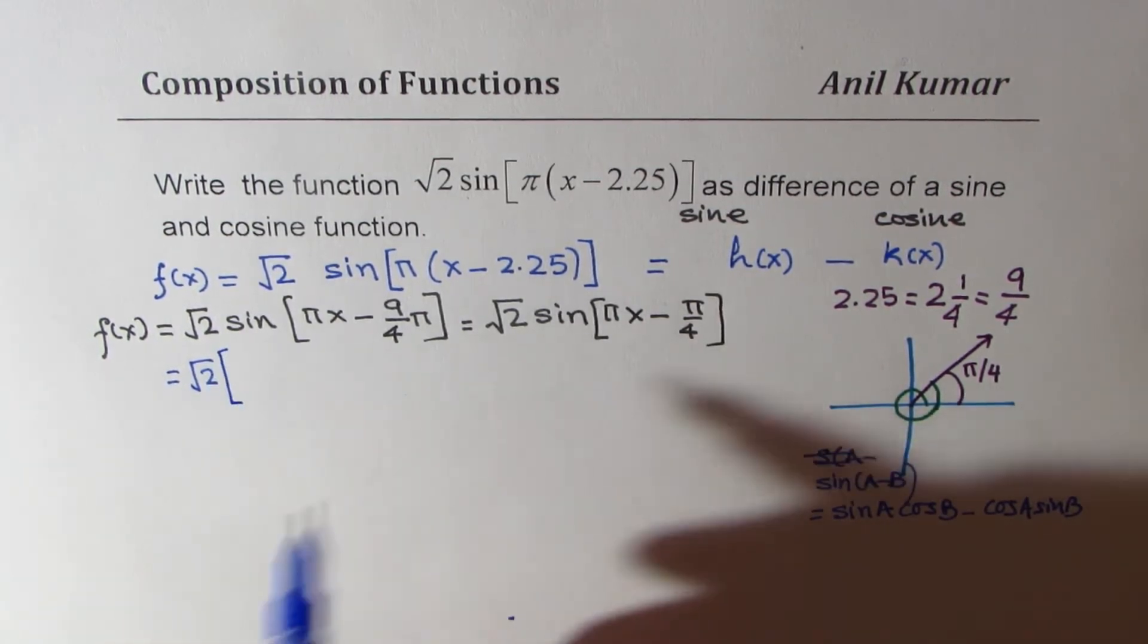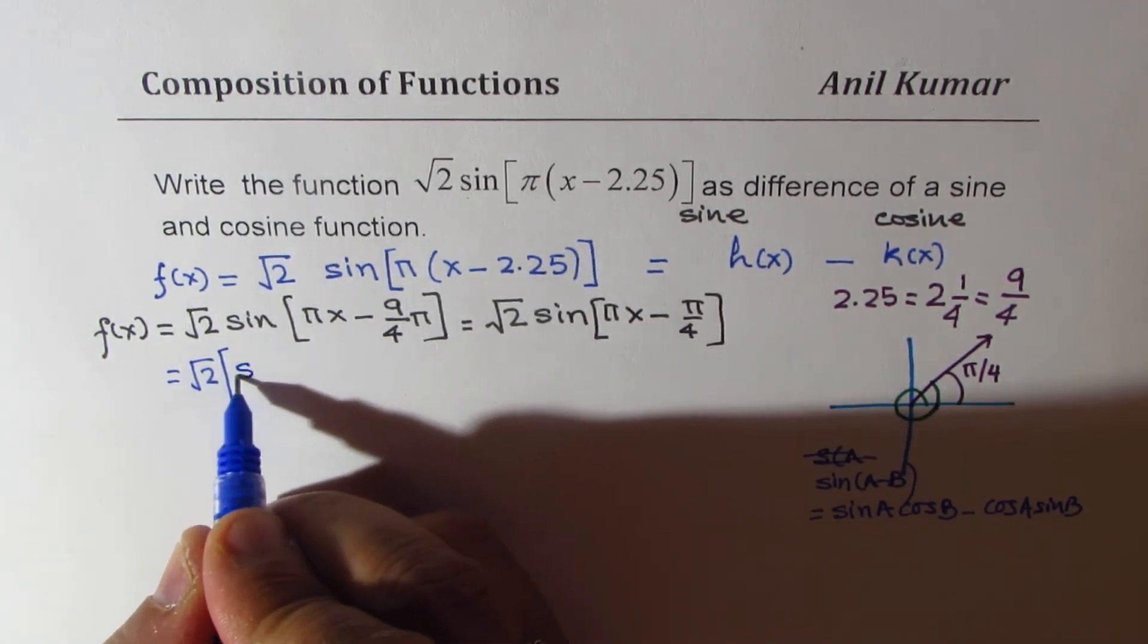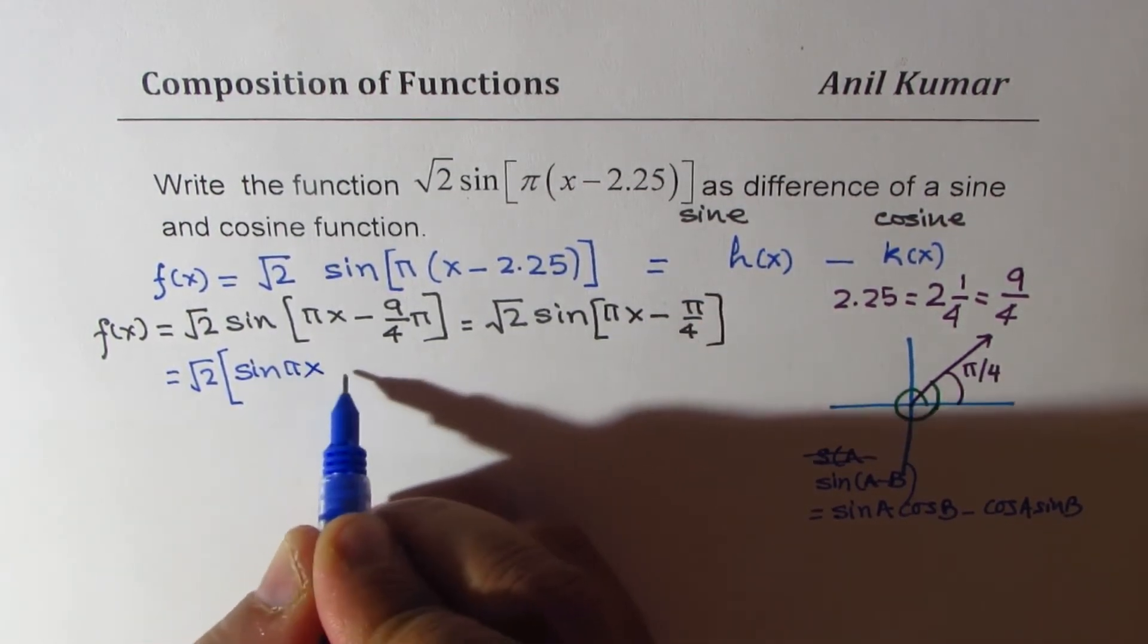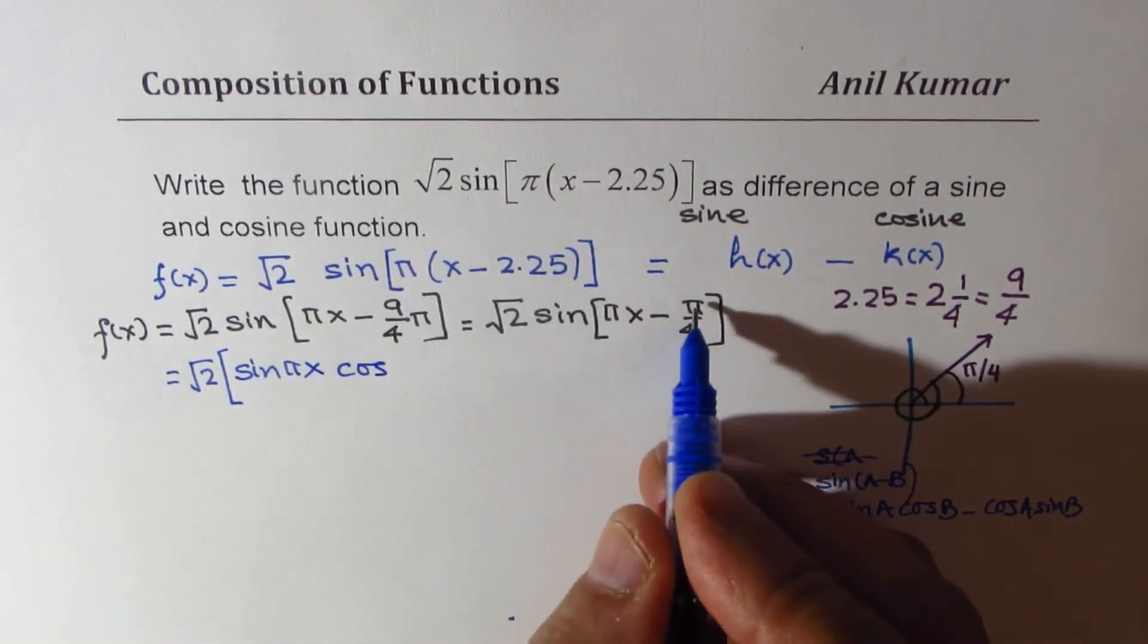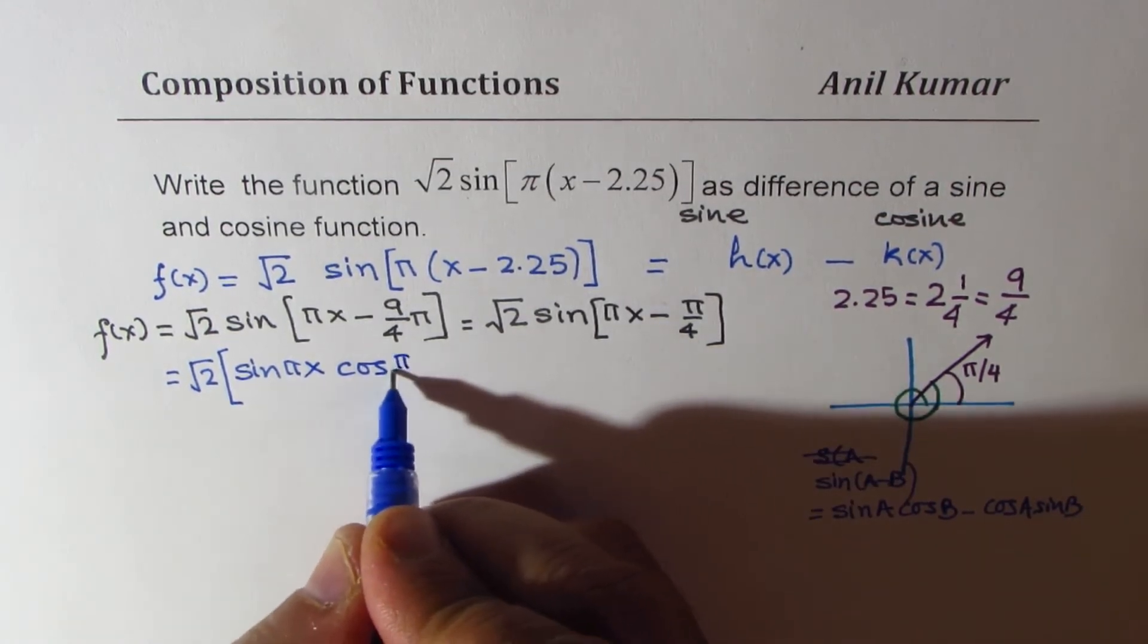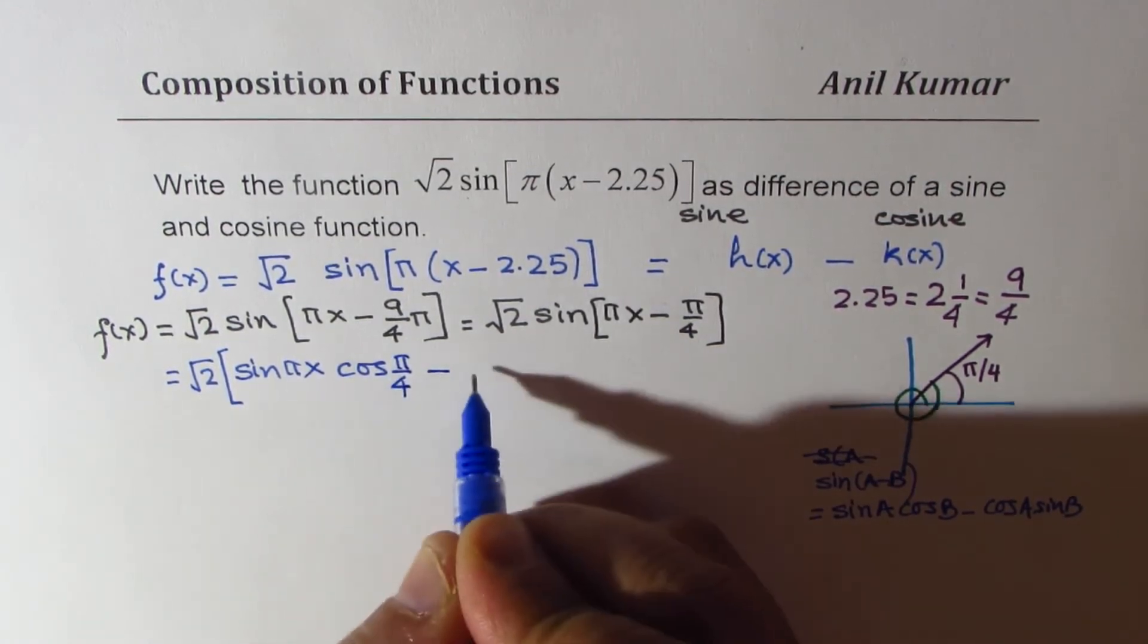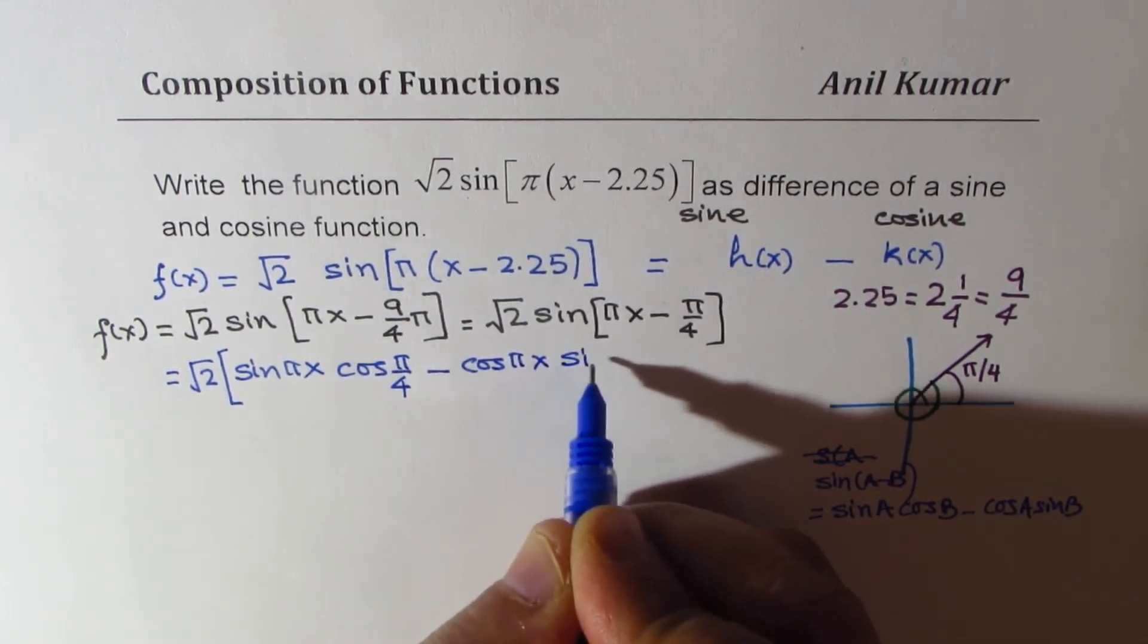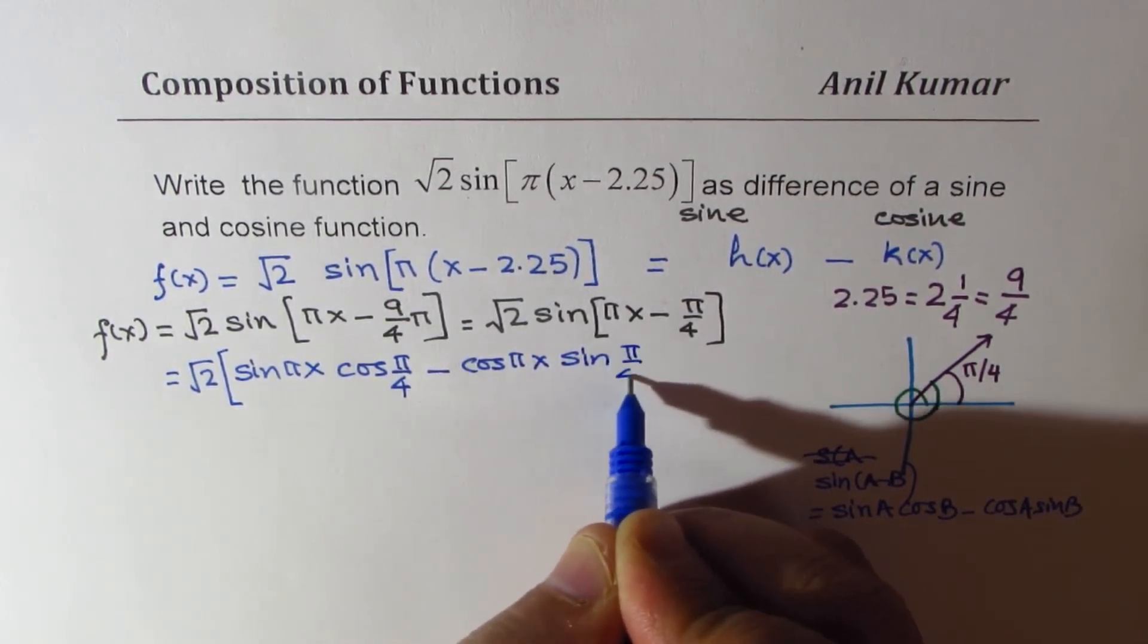So what we get here is sine pi x cos of pi by 4 minus cos of pi x sine of pi by 4. Perfect.